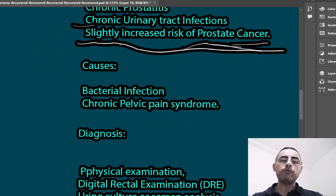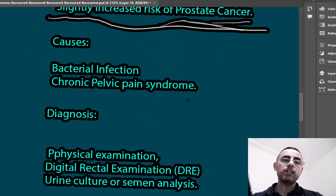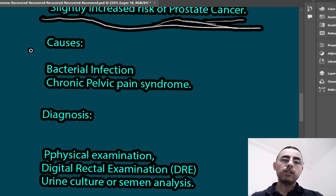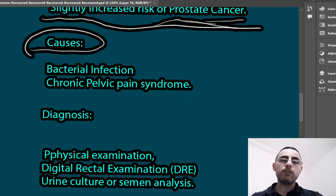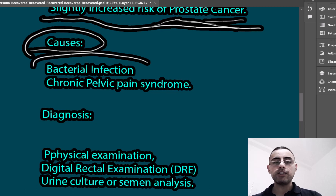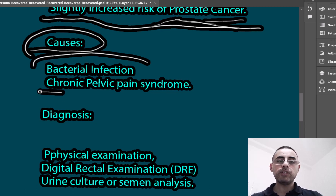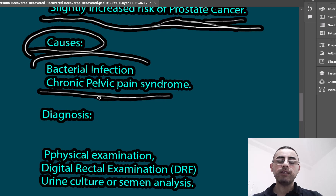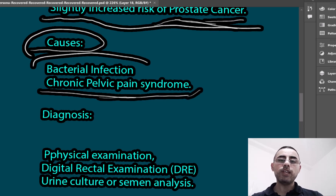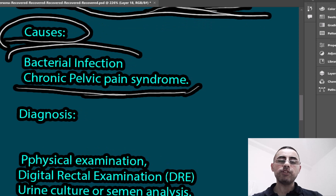The most common cause of prostatitis is bacterial infection. The second most common cause is chronic pelvic pain syndrome, which usually involves dysfunction of the nerves and immune system.